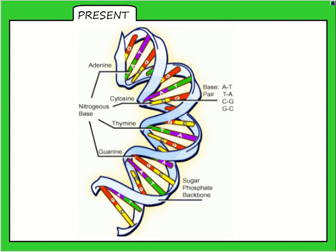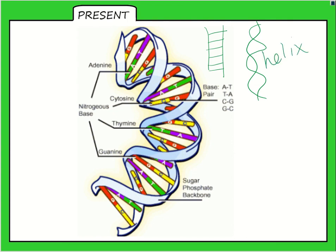If you look at the structure of DNA, it's got two strands. If you unwind it, it looks like a ladder. But as you can see in this diagram, it's twisted — that twist is called a helix. So it's called a double helix because it's got two strands and it's a helix.